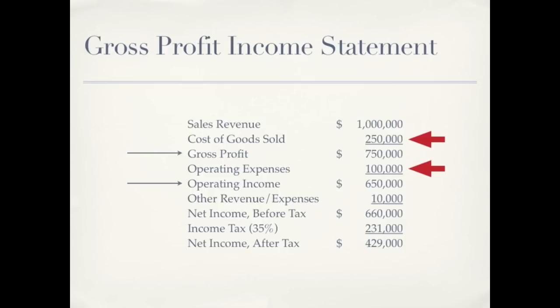To operating income you may have some other things that don't really fit anywhere, like other revenue and other expenses. An example of other revenue would be if you loaned out money to someone and you're charging them interest. If loaning money is not your day-to-day business operations, then that's not sales revenue — that would be other revenue.